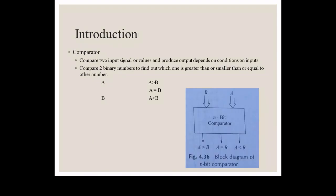So what is a Comparator? A Comparator compares two input signals and produces the output depending on the conditions of the input. Here in the diagram, A and B inputs are given to the Comparator — it is an N-bit Comparator, meaning one bit, two bit, four bit or five bit. It compares A and B and gives three outputs: if A is greater than B, if A is equal to B, or if A is less than B.